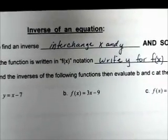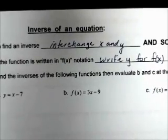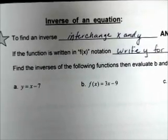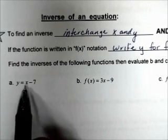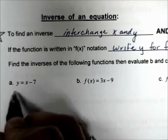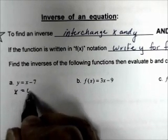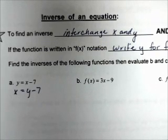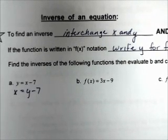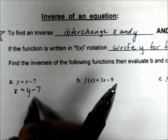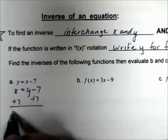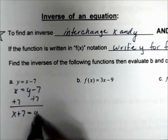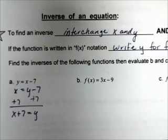We want to find the inverses of the following functions, then evaluate b and c at the given values. This is a two-step process. Interchange x and y: so x = y − 7. Now solve for y — add 7 to both sides — and we get x + 7 = y. So the inverse is y = x + 7.